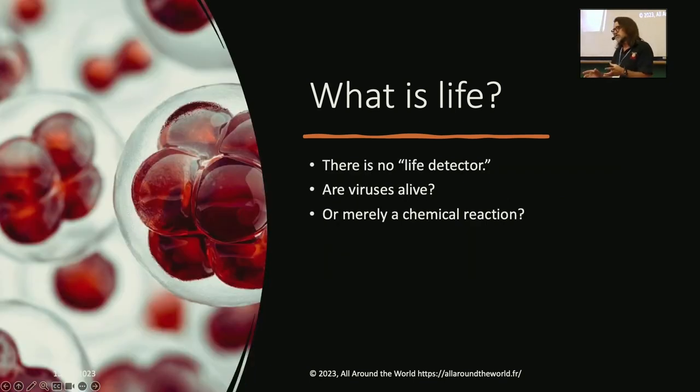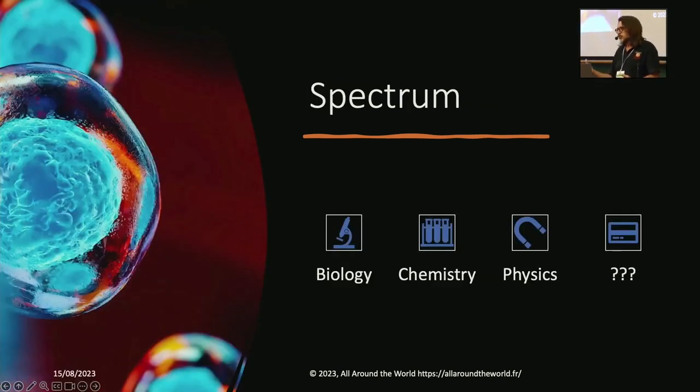So we don't have a universal life detector. A lot of people are like, why didn't we send a life detector with such and such a probe? Because we don't have one. And since we're arguing about what is life, a lot of biologists argue, are viruses alive? Or are they just some sort of chemical process? But biology emerges from chemistry. Chemistry emerges from physics. Physics might emerge from something we don't know. Maybe that's the bottom of that stack of turtles going all the way down. Maybe there's something else. We actually don't know the questions to that.